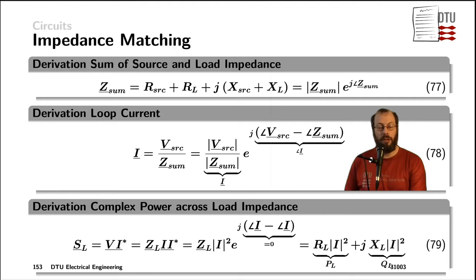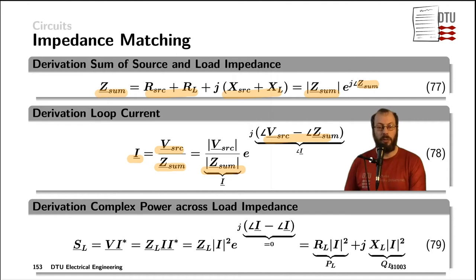To derive the impedance matching for maximum power transfer, we express the total current going through the circuit as the source voltage divided by both impedances — where both impedances are the source and load impedance in series — with real parts on the left and imaginary parts on the right. We can express these as a phasor in terms of an amplitude and an argument of the impedance sum. The amplitude of the current phasor is the source voltage amplitude divided by the impedance sum amplitude, and the argument is their difference.